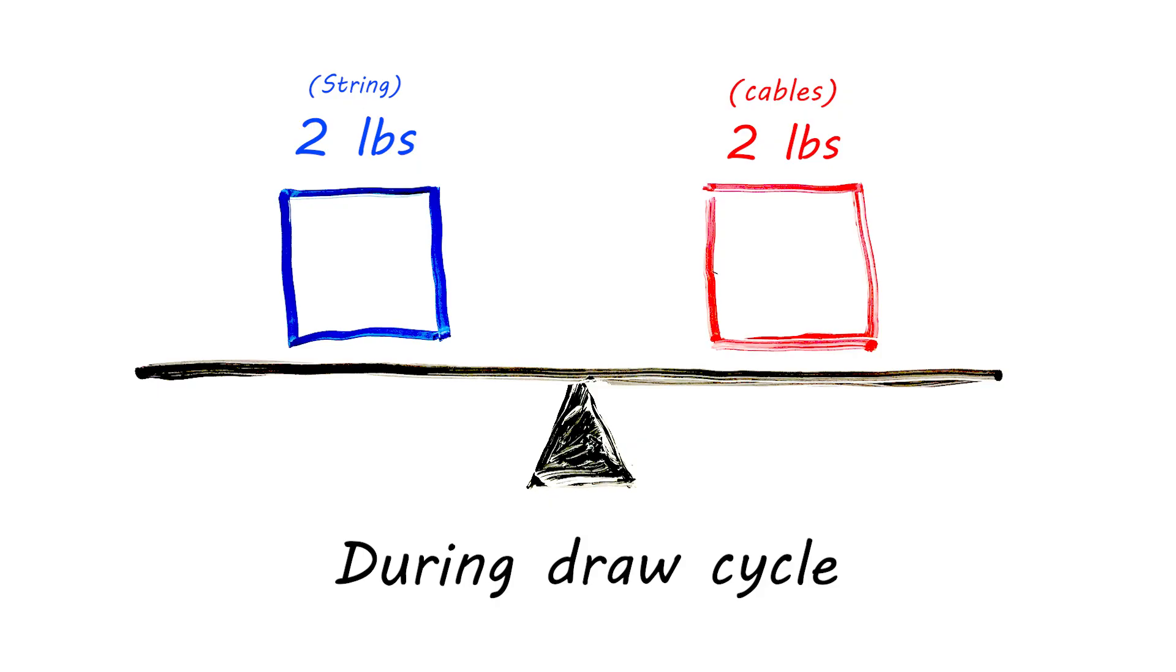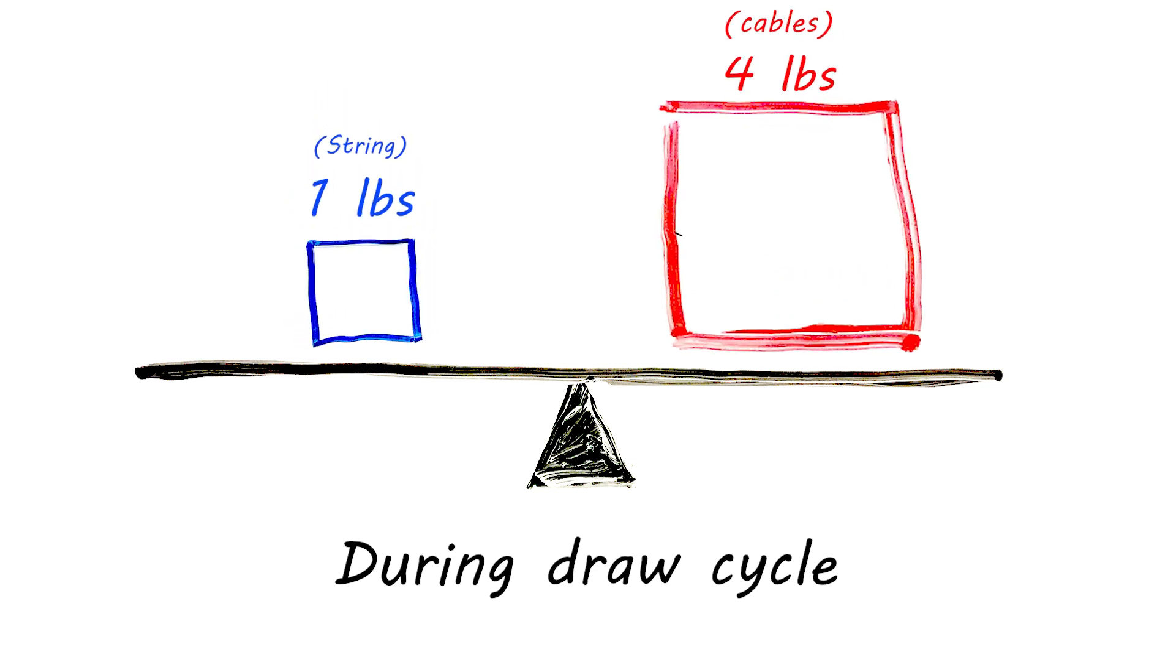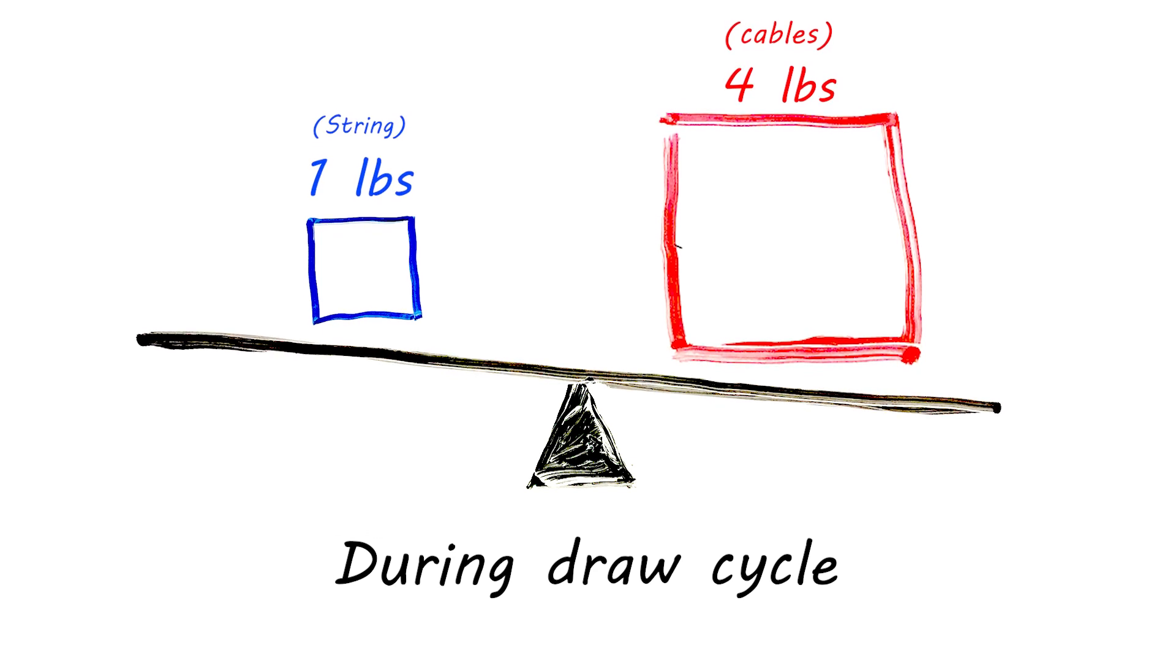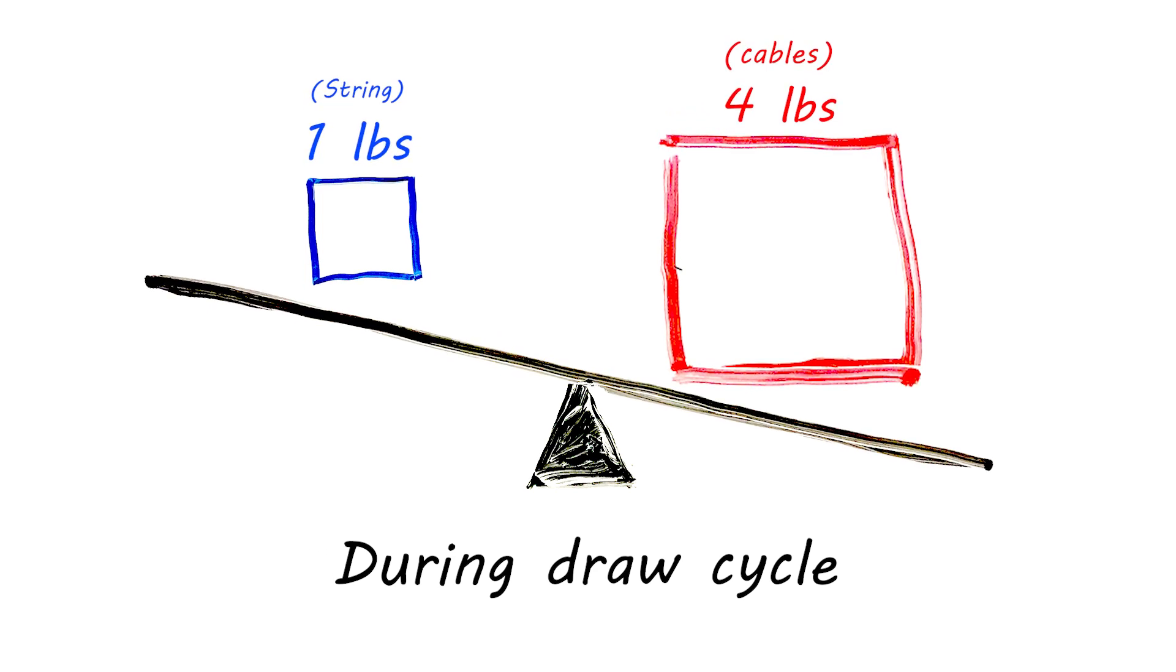This time we're going to double the weight of the one box, and we're going to half the weight of the other box. So clearly, in this system, because the weights are so different now, this whole teeter-totter is not going to stay straight. It's going to tip.